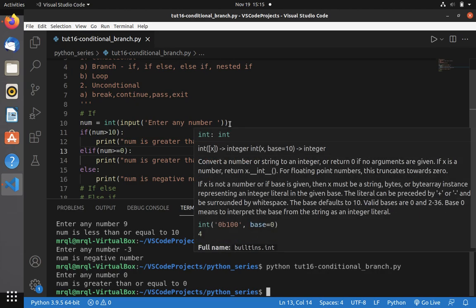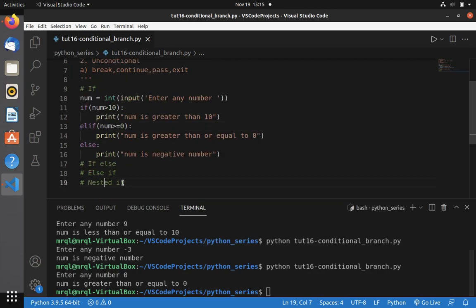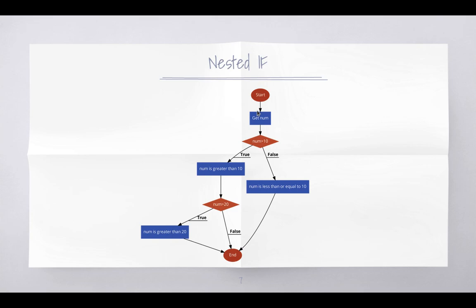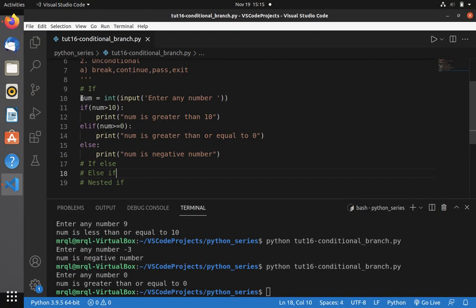Now let me move into nested if. Let me switch to the slides. This is how nested if works — it has a condition inside an if block, meaning an if inside another if block. First we check if num is greater than 10. If it is, we print 'num is greater than 10', then check whether number is greater than 20. If greater than 20, we print that; otherwise we terminate execution with no print statement.